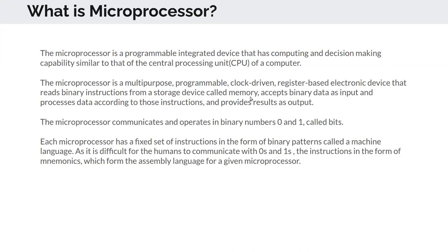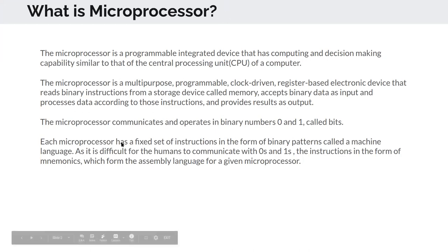You can define a microprocessor as a multi-purpose, programmable, clock-driven, register-based electronic device that reads binary instructions — zeros and ones — from a storage device called memory. It accepts binary data as input, processes it according to those instructions, and gives back the result. The microprocessor communicates and operates in binary numbers, zeros and ones. Each microprocessor has a fixed set of instructions, which we call an instruction set.